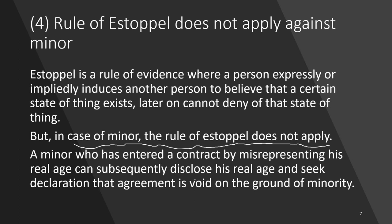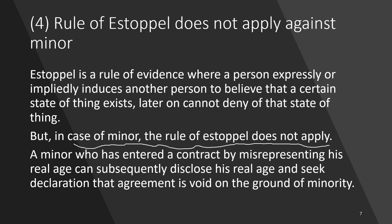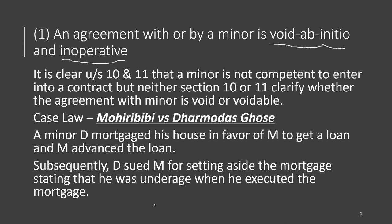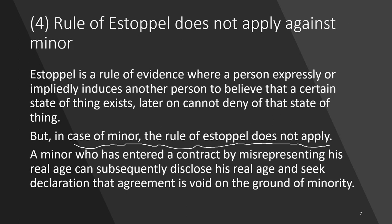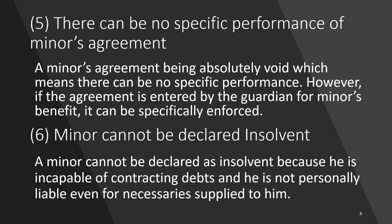A minor who has entered into a contract misrepresenting his real age can subsequently disclose his real age and seek a declaration that the agreement is void on the ground of minority. This is what happened in Mohiri Bibi versus Dharmodas Ghosh — this minor, misrepresenting his age, took a loan and mortgaged the property, then later said he was underage. A minor cannot be held responsible for such misrepresentation.